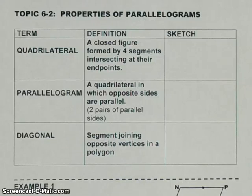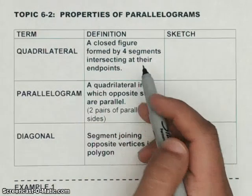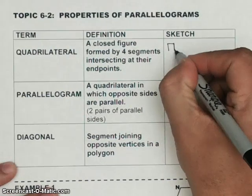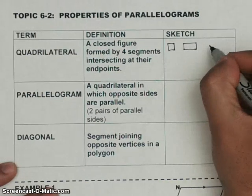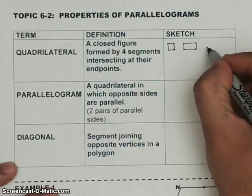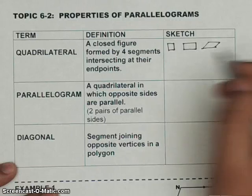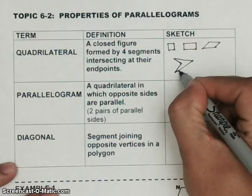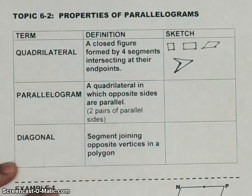Today we're going to talk about parallelograms, and we're going to start with some definitions. A quadrilateral is a closed figure formed by four segments intersecting at their endpoints. Some standard or traditional examples would be something like a square or a rectangle, and things like a parallelogram. There are also some shapes that look a little different that you wouldn't consider a typical quadrilateral, but they would still have four sides.